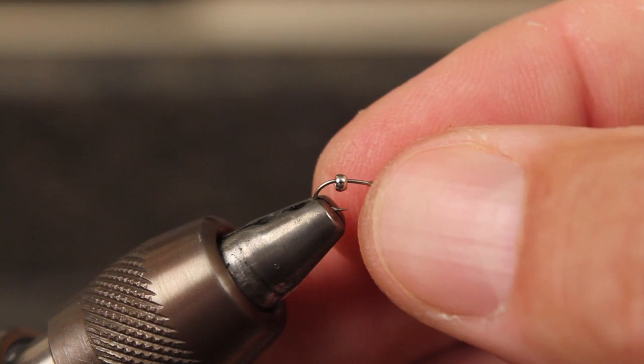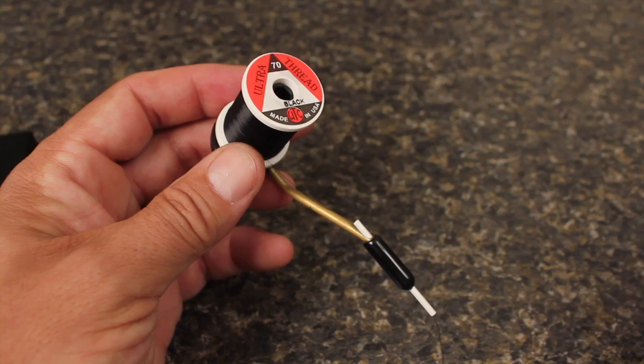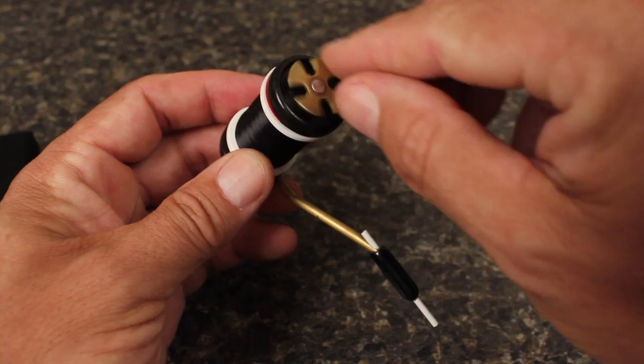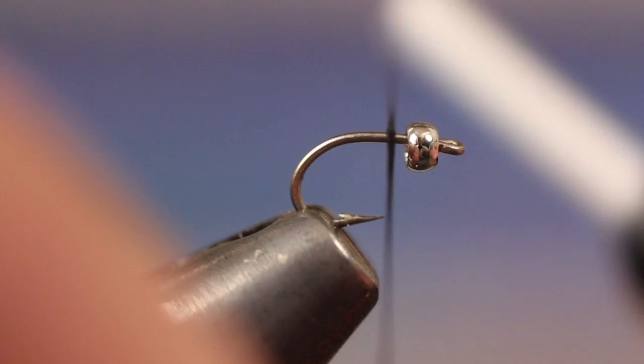It can be a microscopic wrestling match to get the bead on the hook small hole first, but do your best. For tying thread, I'm using UTC 70 Denier in black. I have it mounted on a small bobbin with a ceramic tube that I really like for tying smaller flies.